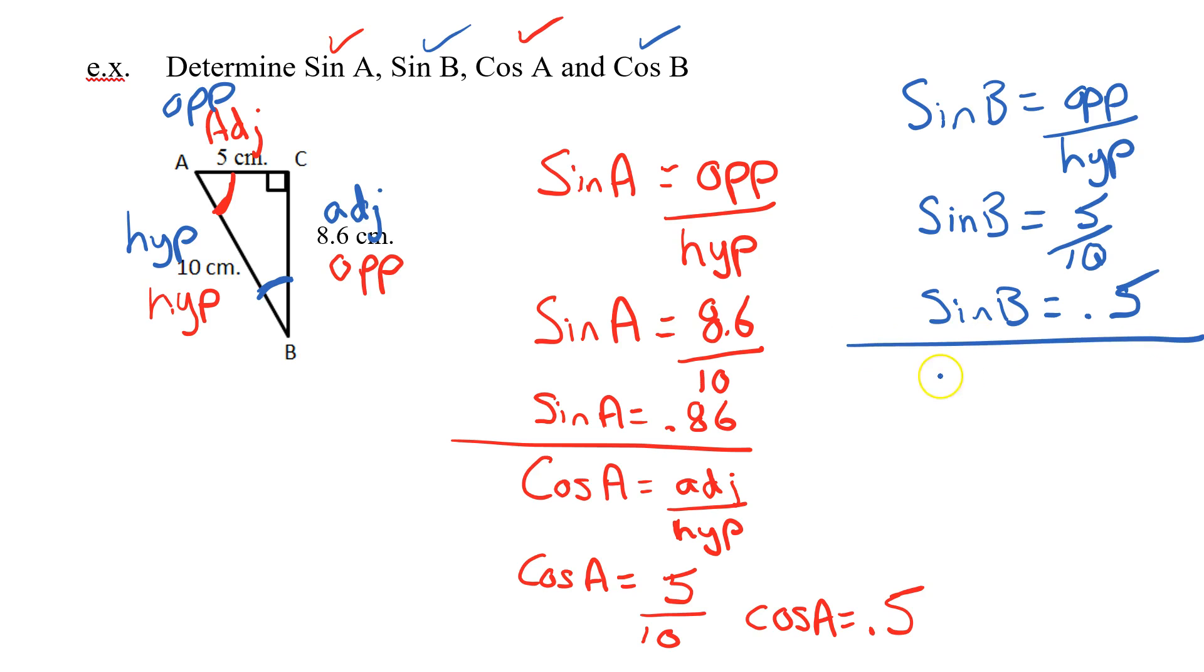Now let's do the cos of B. And I can probably predict that the cos of B is going to be equal to 0.86. It should work out that way. Let's try it. Cos of B is adjacent over hypotenuse.